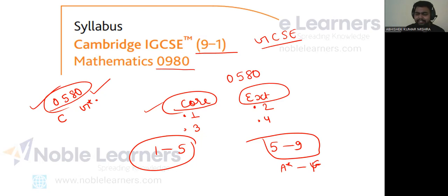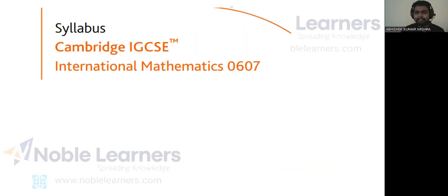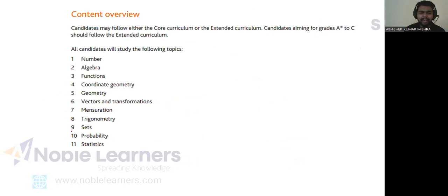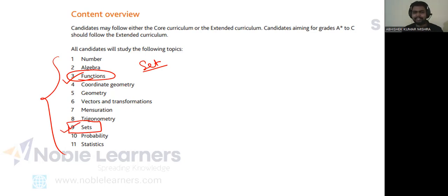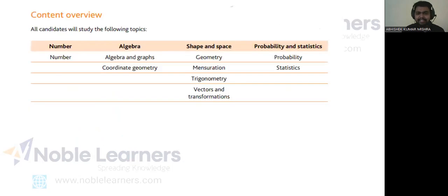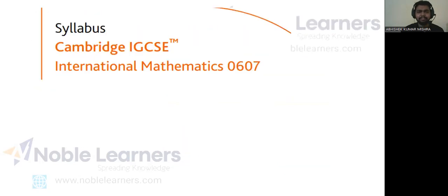Now let us discuss Mathematics International (0607). The syllabus is almost the same as 0580, with just one small difference: the topic of Sets. Sets is a chapter you need to study in this course, and the chapters are arranged somewhat illogically — for example, the Sets chapter is listed at position 9 even though it is a prerequisite for Functions, which appears at chapter 3. But other than this one extra chapter, there is no significant difference in International Mathematics.